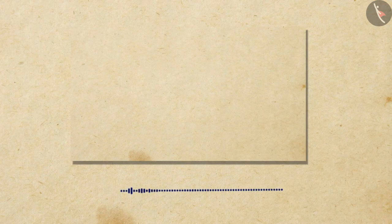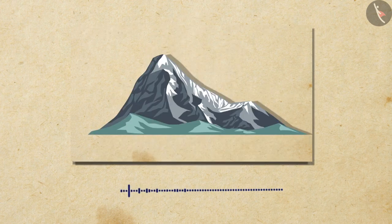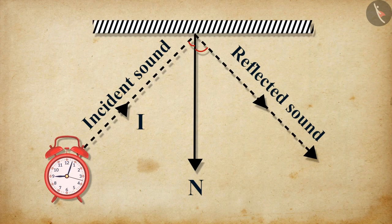An obstacle of a large size, which may be smooth or rough, is required for the reflection of sound waves. Now, let us perform a simple experiment to understand the relationship between the angle of incidence and the angle of reflection.